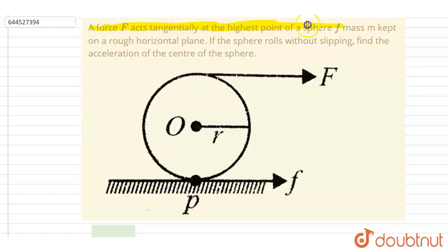tangentially at the highest point of a sphere of mass m kept on a rough horizontal plane. If the sphere rolls without slipping, find the acceleration of the center of the sphere.